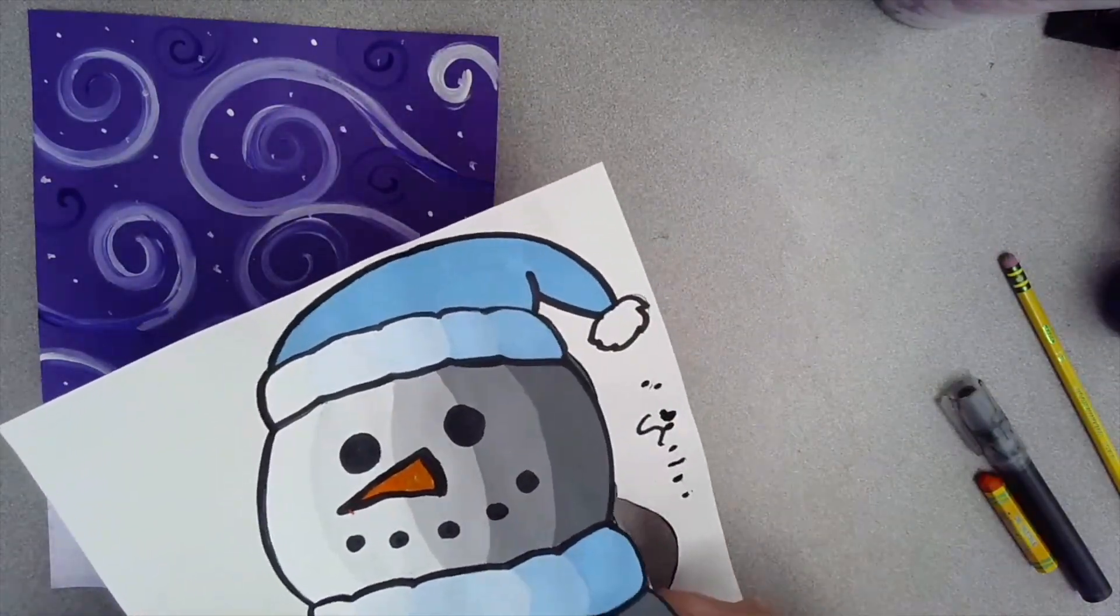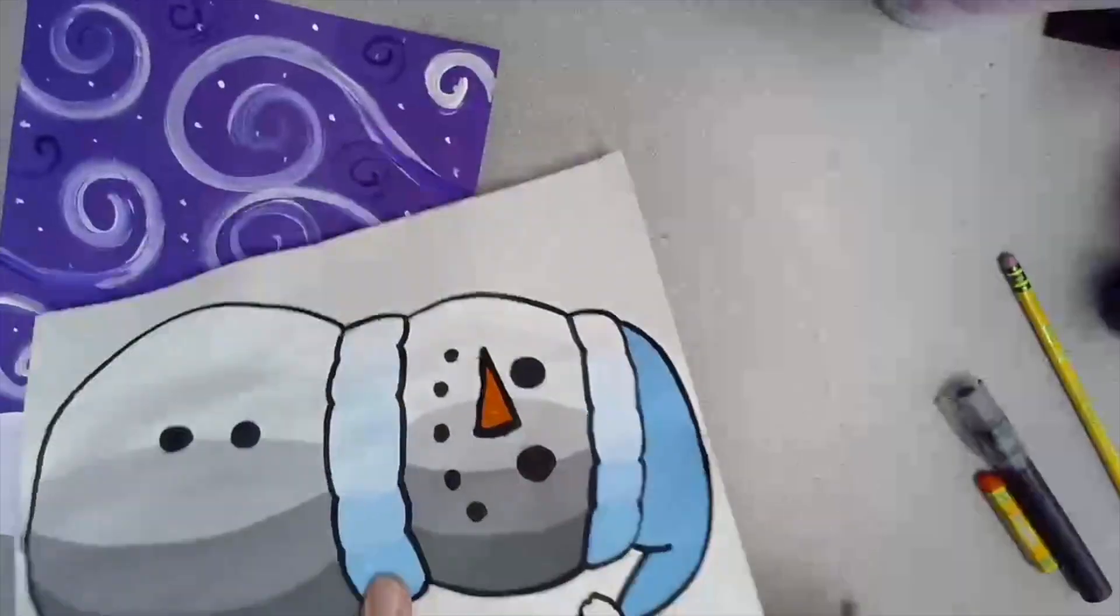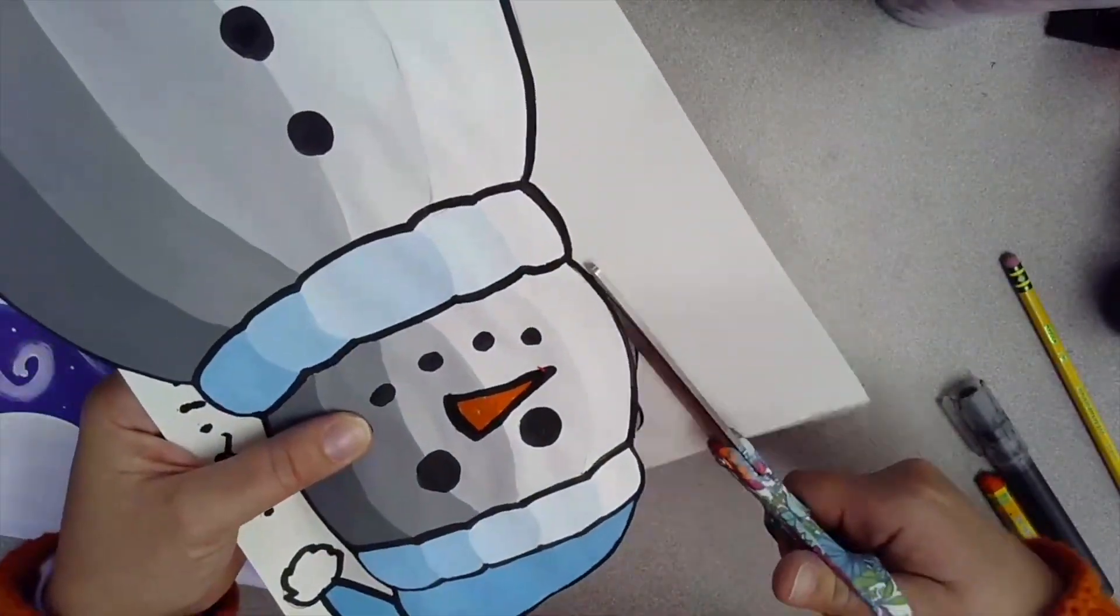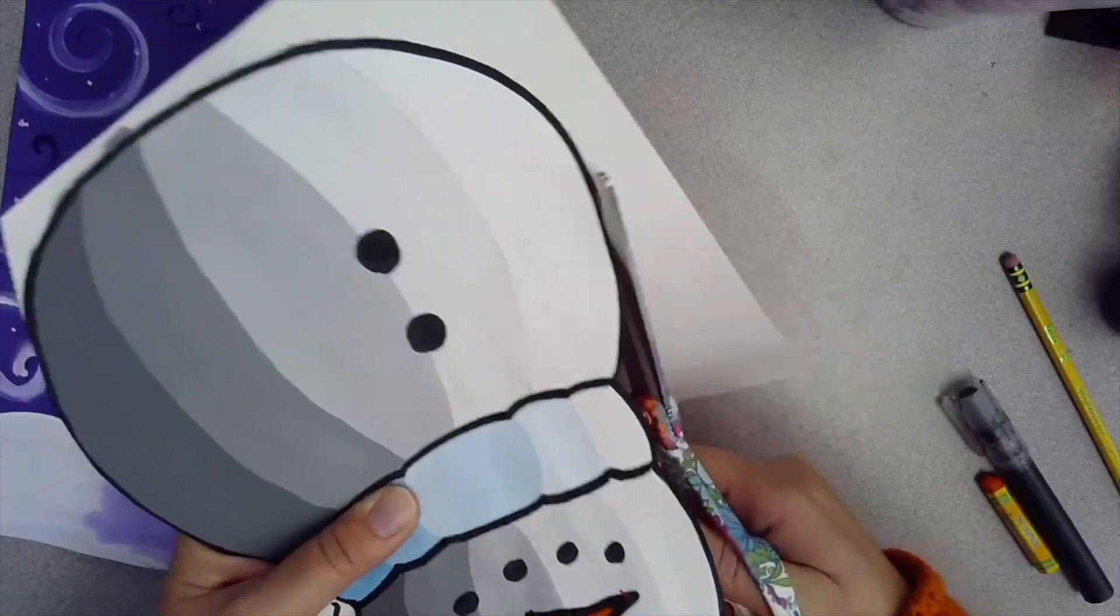Next, cut out your snowman and glue him to your background. Make sure that everything is dry before you glue it all together. You can use a glue stick or you can use a glue bottle. Glue bottle might be a little bit stronger than a glue stick though. Don't forget to sign your work when you're finished.